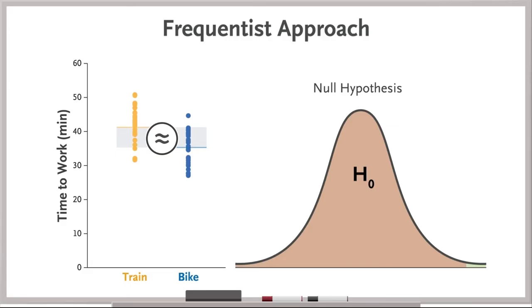If this probability, or p value, is less than 0.05, the frequentist approach rejects the null hypothesis, declaring that the data you observed would have been very unlikely if there were truly no difference.